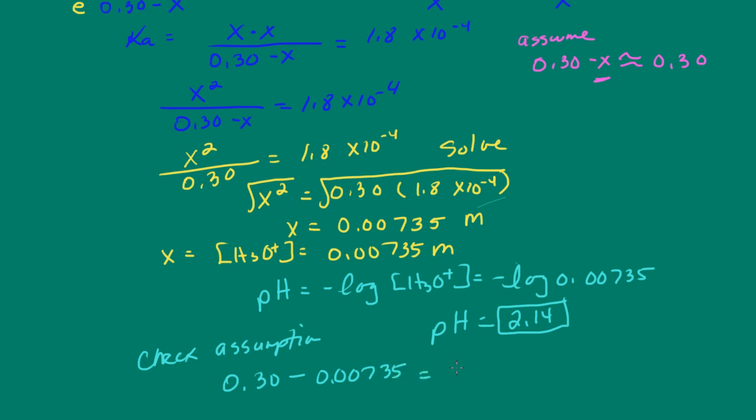So what I'm going to do is I'm just going to take 0.3 and subtract 0.00735. And that is approximately 0.3 molar. So my assumption was valid.